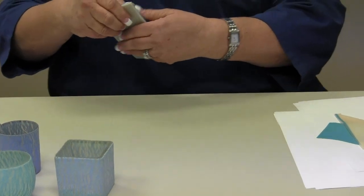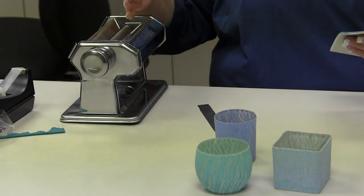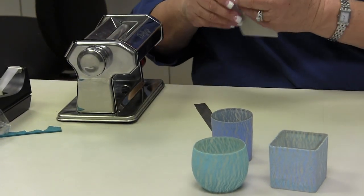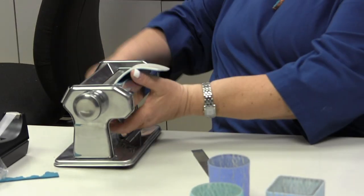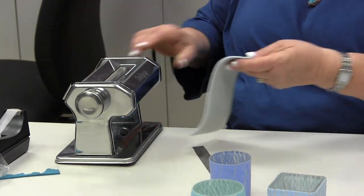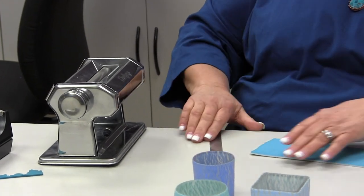And then what I start to do is just roll it in the clay conditioning machine smaller and smaller. So this started out on a one and I'm going to put it through on a number two. And it already has started cracking a little bit.